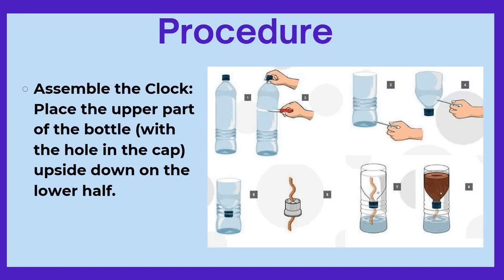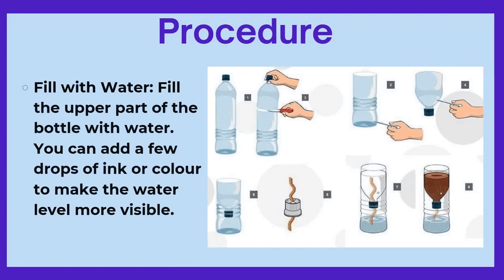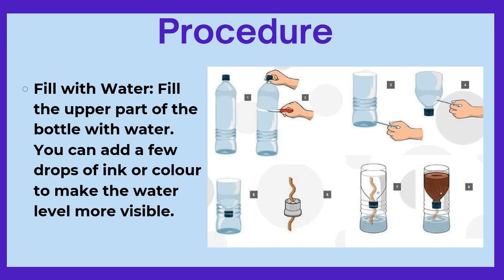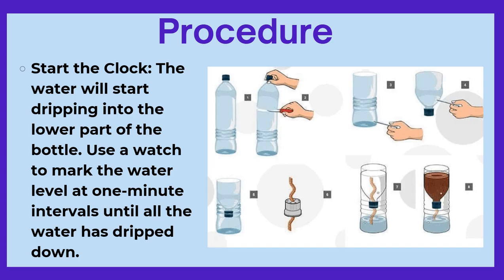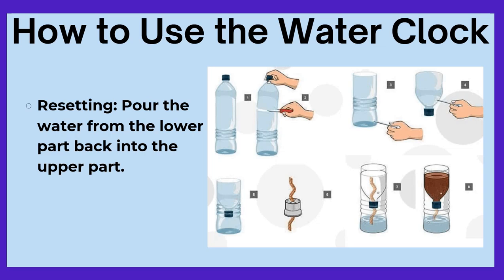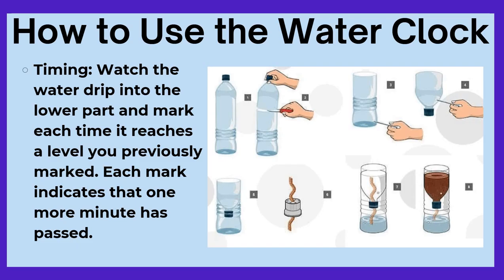To assemble the clock, place the upper part of the bottle with the hole in the cap upside down on the lower half. Fill the upper part with water — you can add a few drops of ink or color to make the water level more visible. Start the clock: the water will drip into the lower part. Use a watch to mark the water level at one-minute intervals until all the water has dripped down. To reset, pour the water from the lower part back into the upper part. Watch the water drip and mark each time it reaches a previously marked level — each mark indicates that one more minute has passed.